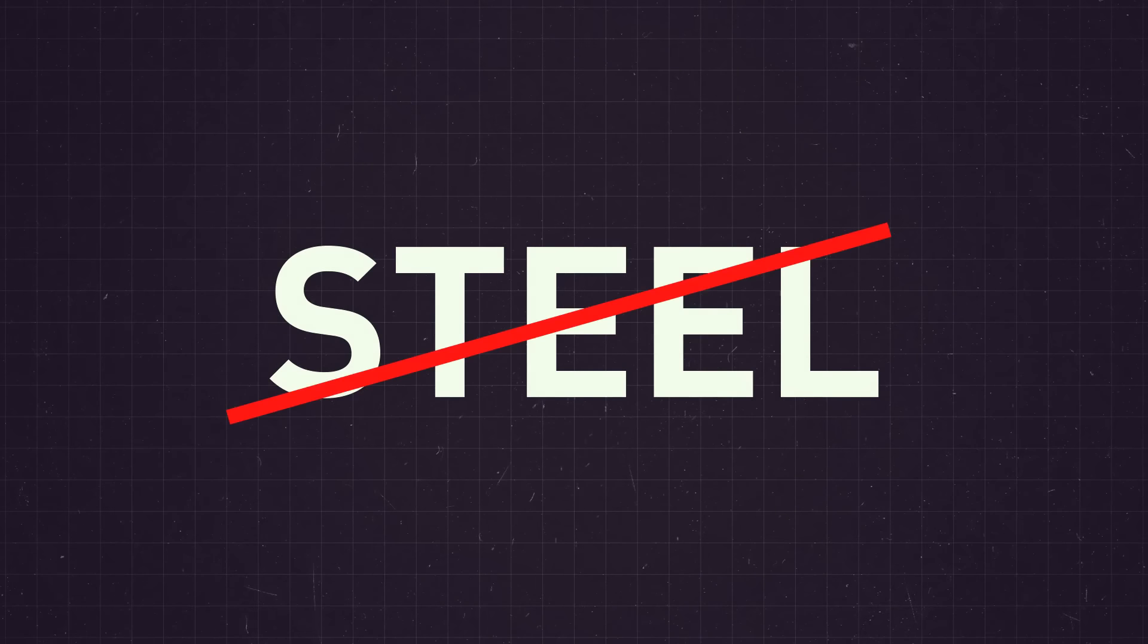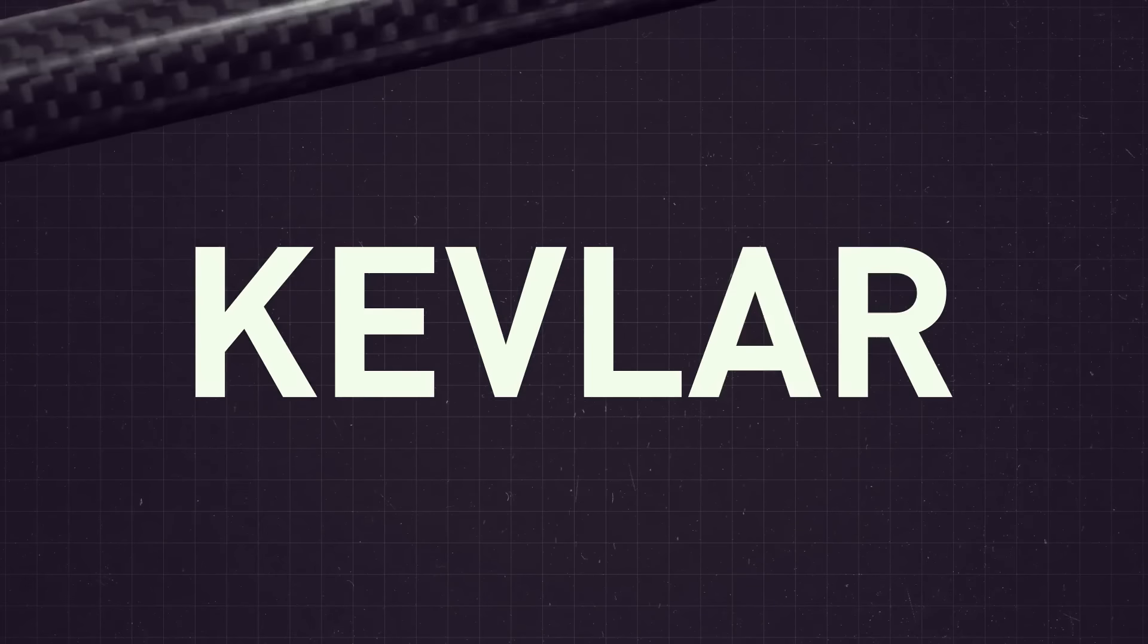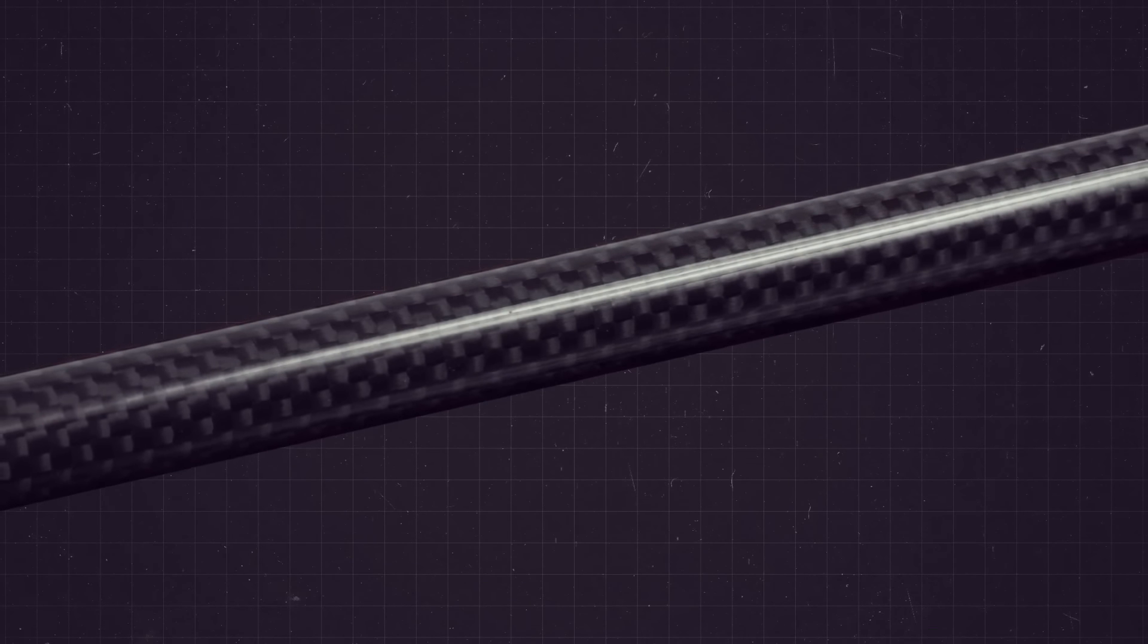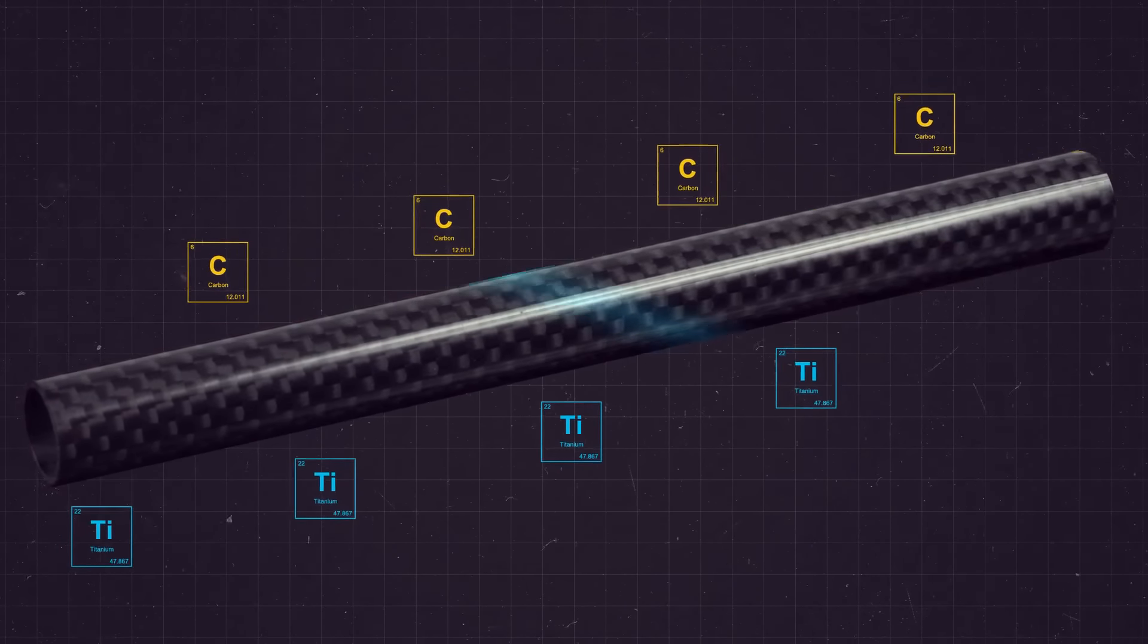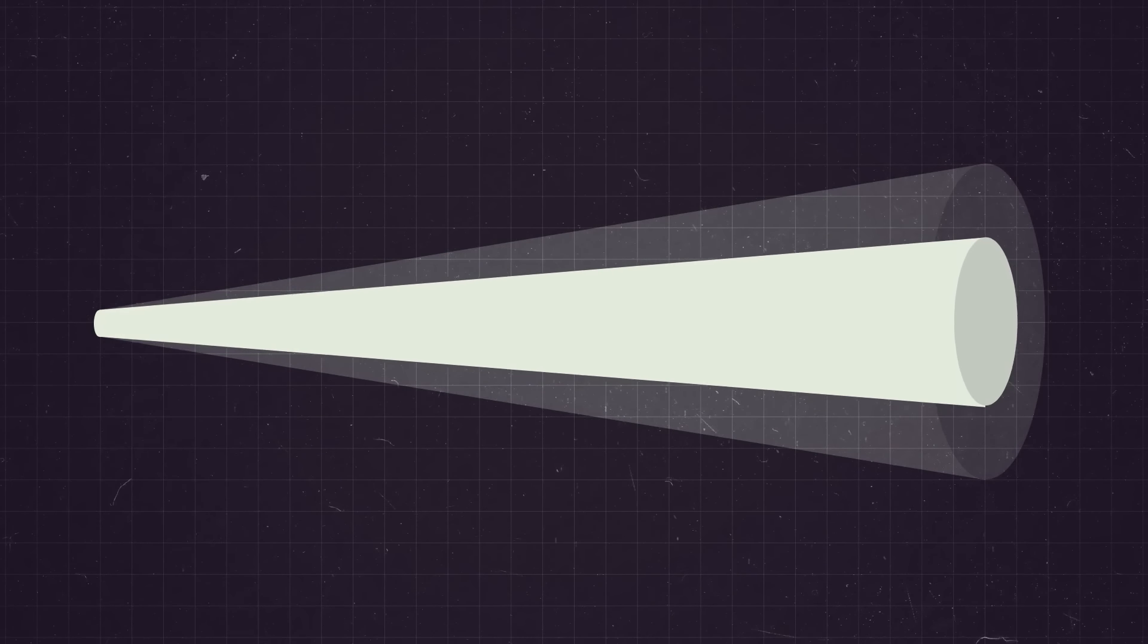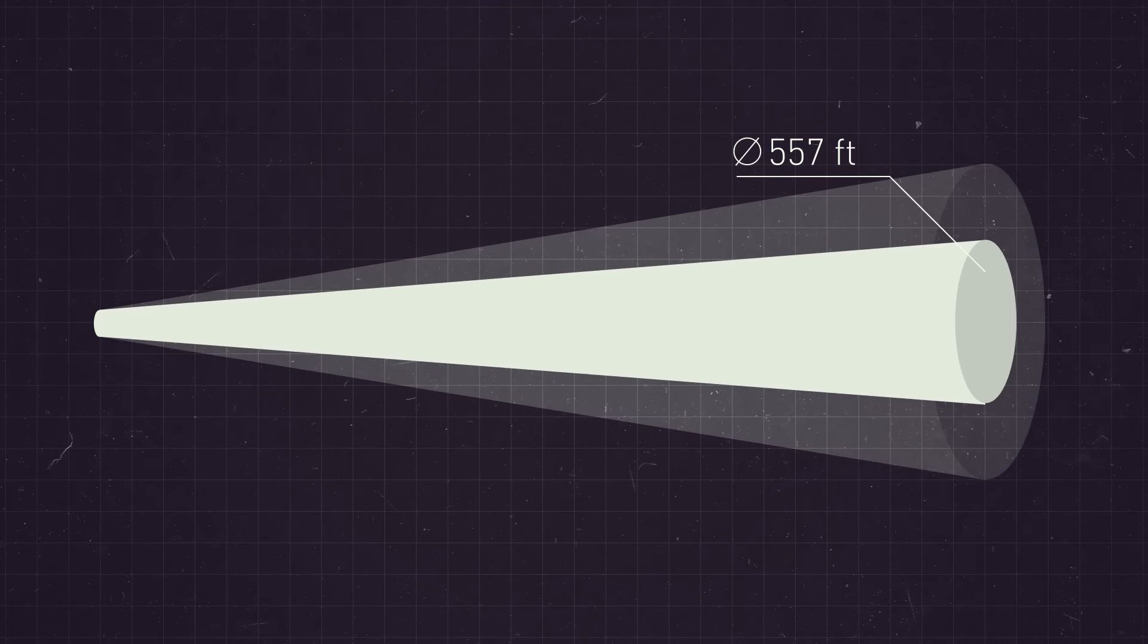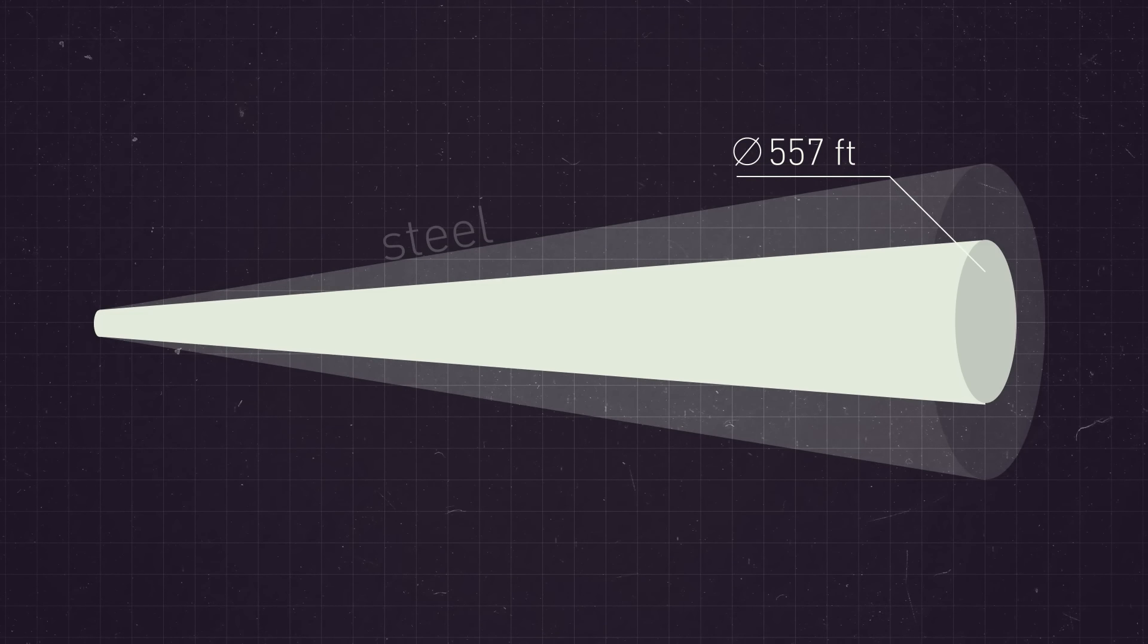So, steel is off the list. Another candidate is Kevlar, which is five times stronger than steel. And if we added such materials as carbon and titanium into the mix, the strength would increase tenfold. The line would have a diameter of around 262 to 557 feet. This is drastically smaller than the diameter of the steel cable could be.